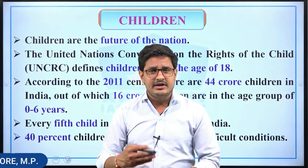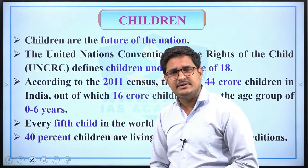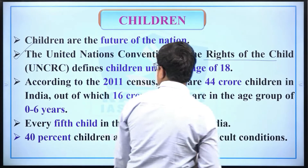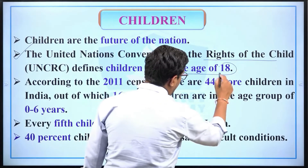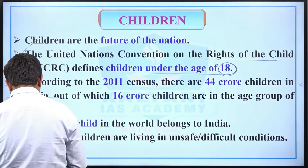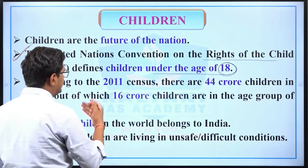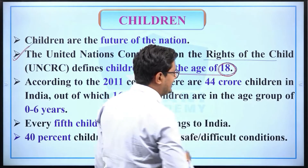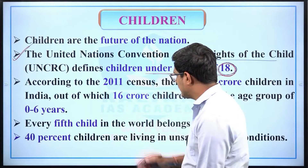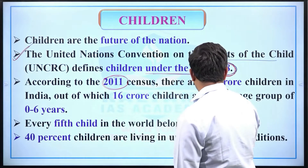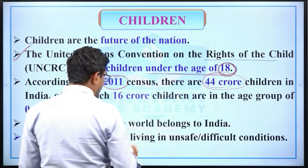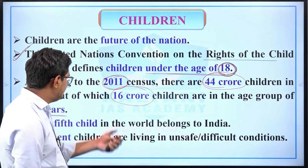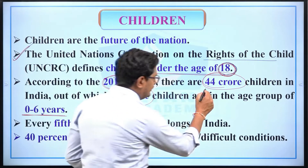We need to look into the issues of children. First, we understand who would be considered a child. According to the United Nations Convention on the Rights of the Child (UNCRC), anyone under the age of 18 would be considered as a child. According to the 2011 Census, there are 44 crore children in India, out of which 16 crore children are in the age group of 0 to 6 years.